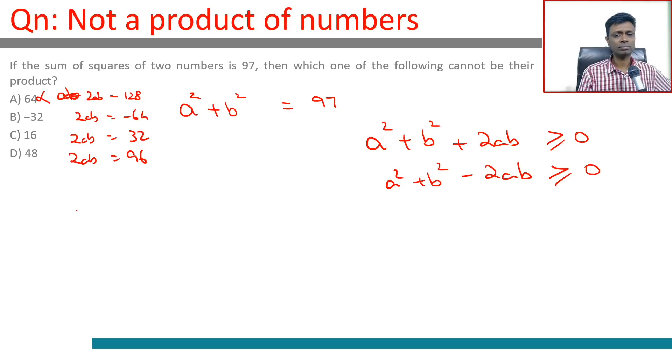Quite simply put, a² + b² should be greater than or equal to the modulus of 2ab. a² + b² should be greater than or equal to 2ab, and it should be greater than or equal to -2ab, that's the condition.